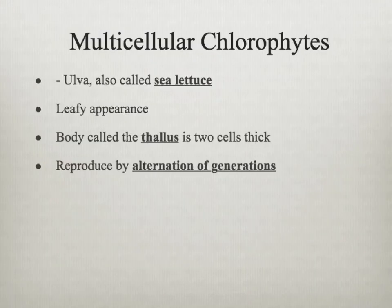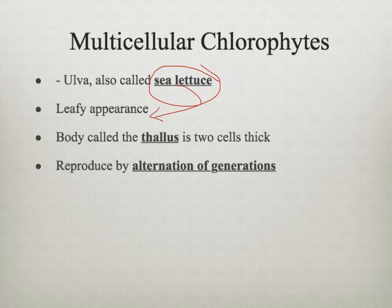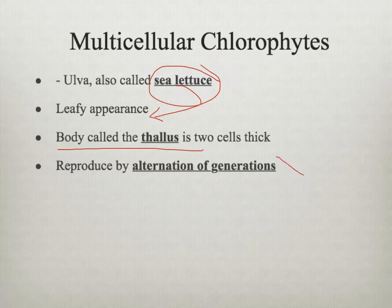When we look at the multicellular chlorophytes, we're going to look at a specimen called Ulva, also commonly referred to as sea lettuce. When you look at sea lettuce, there's a picture in your book and also at the station — you can see where it looks like lettuce. The body is referred to as a thallus, and the leaves are about two cells thick. We're also going to get into alternation of generations, which is how they reproduce.